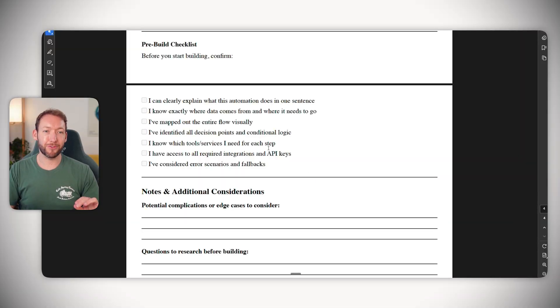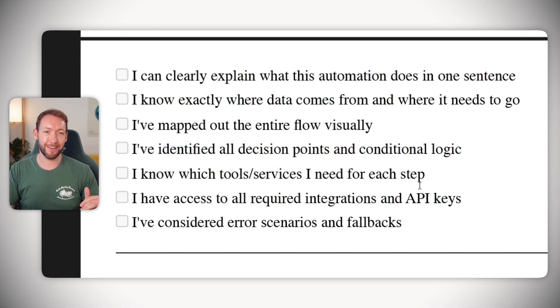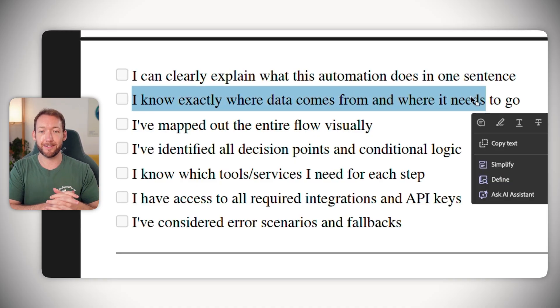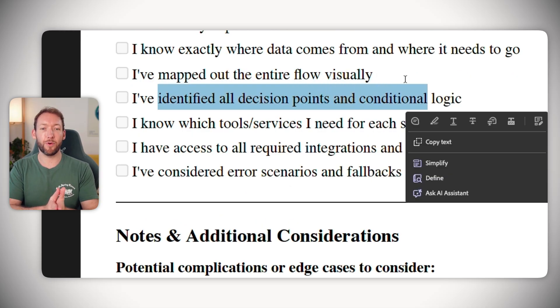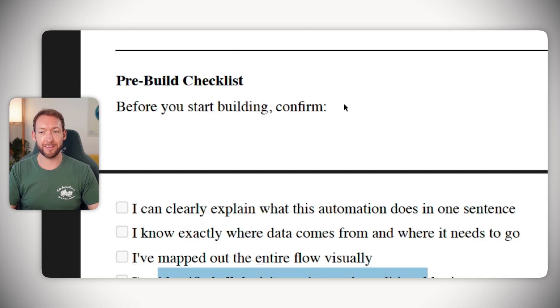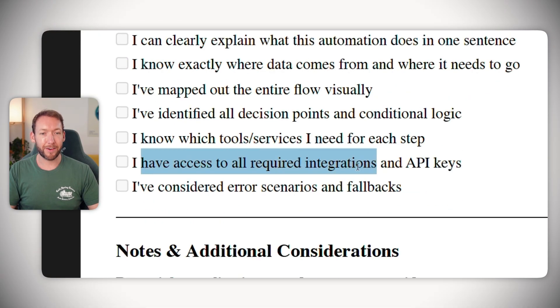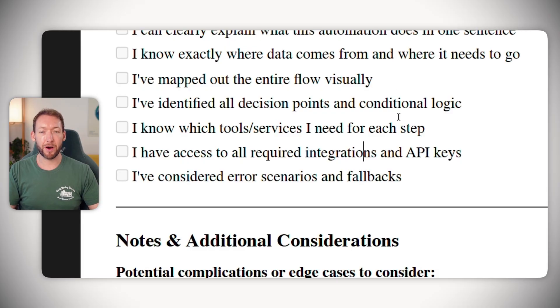So once we've done this, are we ready now to build? Well, let's go to our checklist. And this is the pre-build checklist, super important before you start building anything. I can clearly explain what the automation does in one sentence - we absolutely can do that. I know exactly where the data comes from and where it needs to go - we've mapped that out visually. I've identified all decision points and conditional logic. So this was our if this, then this scenarios. And it's important to note at this point, whilst we have a good understanding now of the workflow, there will be things that come up in the build that make you add decision points that you didn't consider here. But this gets you 80% of the way. So you understand how to approach the problem in the first place.